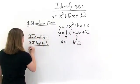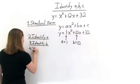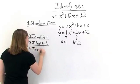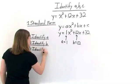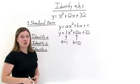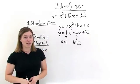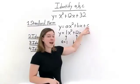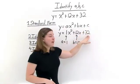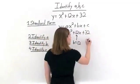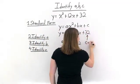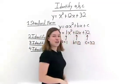Now let's find c. c is the constant that sits at the end — it's the number that does not have an x term associated with it. Here, c is at the end of this equation. The number at the end of our equation is 32, so that means that c is equal to 32.